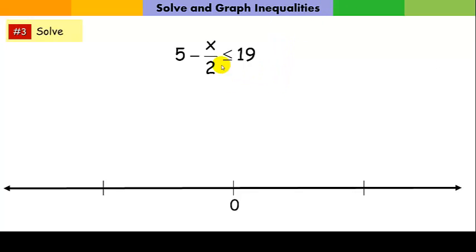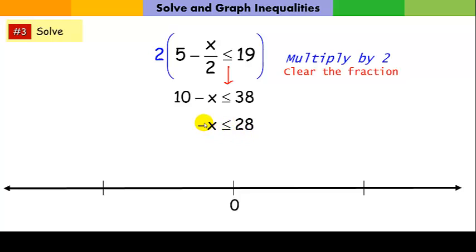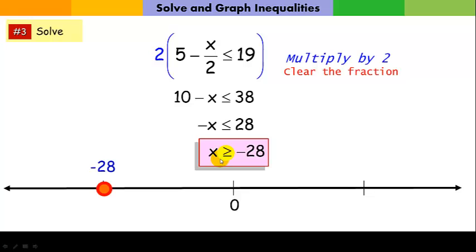For practice problem 3, we clear the fraction by multiplying everything in the inequality by 2, which eliminates the denominator. The sense of the inequality doesn't change since we multiplied by positive 2. Then we subtract the constant from both sides to get negative x less than or equal to 28. To isolate x with a positive coefficient, we divide both sides by negative 1, which switches the inequality. The solution is x greater than or equal to negative 28. The boundary point at negative 28 is inclusive, and the arrow goes to the right.